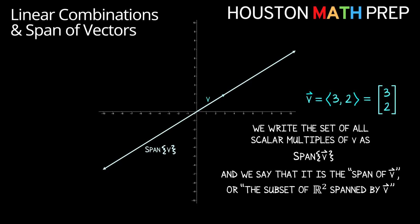If we want to talk about all possible scalar multiples of this vector v, we have a notation that looks like span of v, with our vector v in curly brackets. We call this the span of v, or the subset of R2 spanned by v. It's the line in R2 through the origin that is in the direction of vector v. The zero vector — 0 times vector v, i.e., the vector 0 comma 0 — also fits on this line since it starts at the origin and goes nowhere.